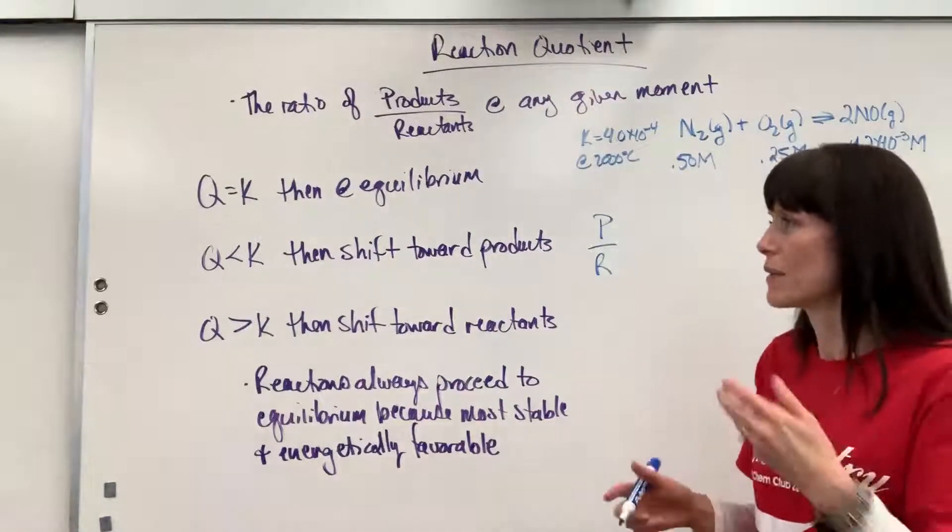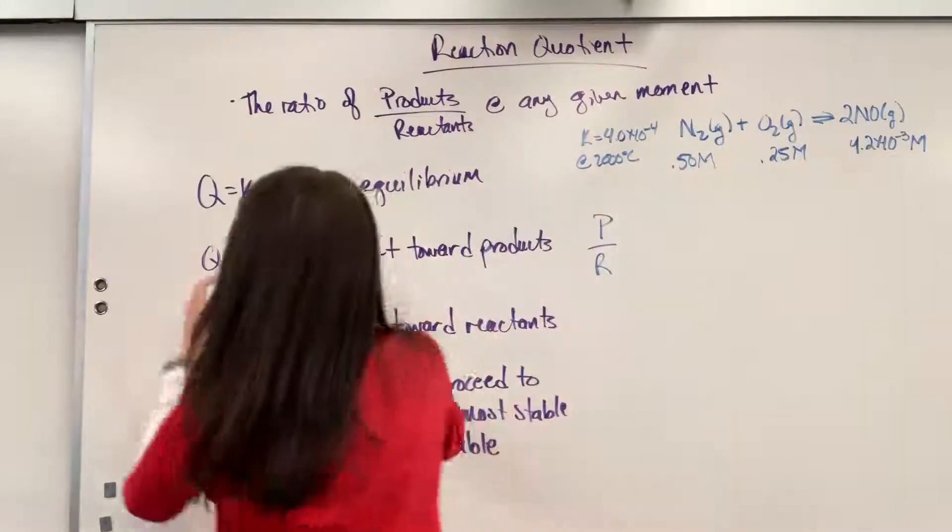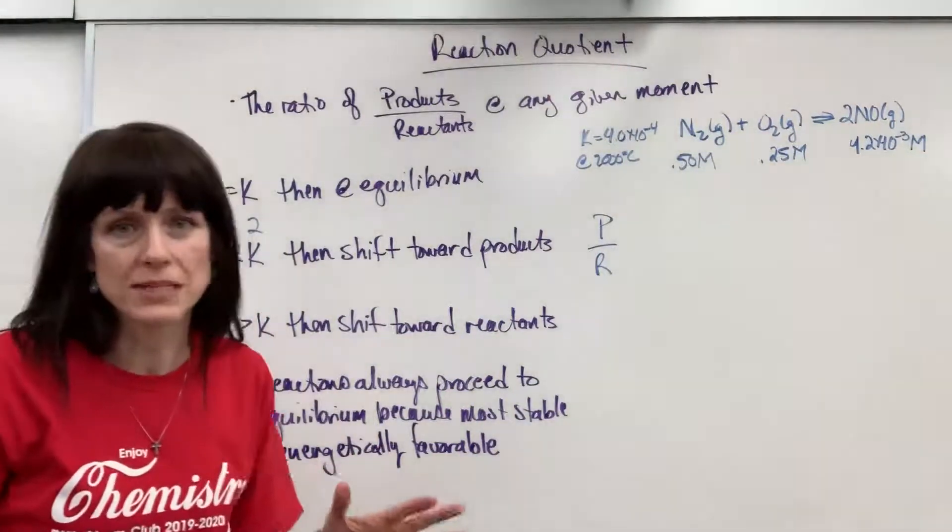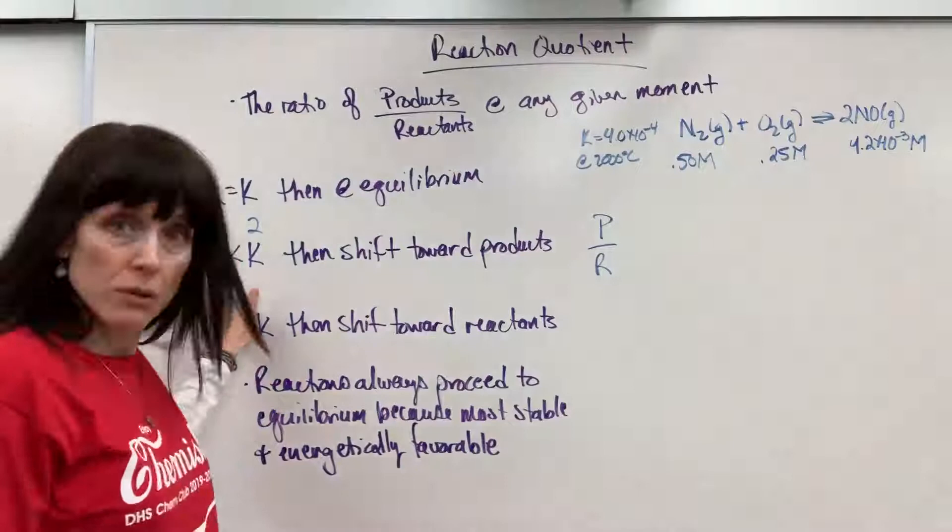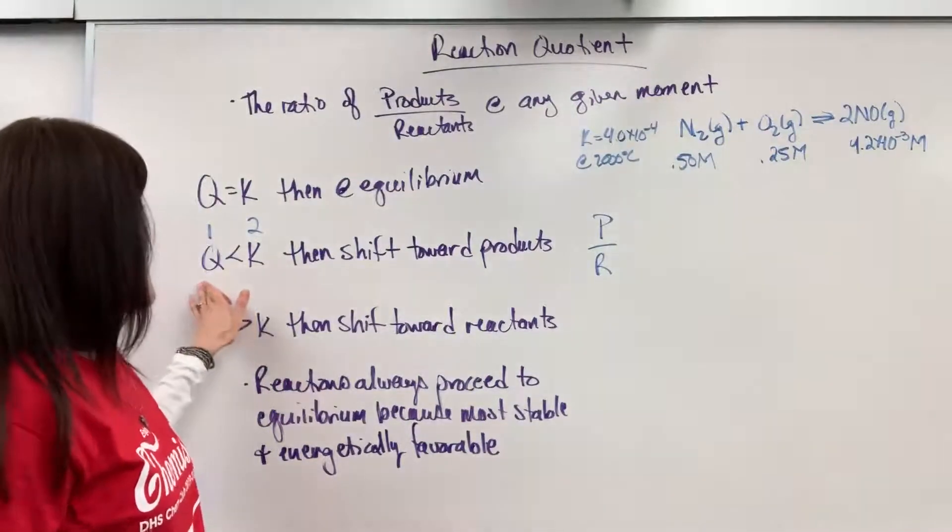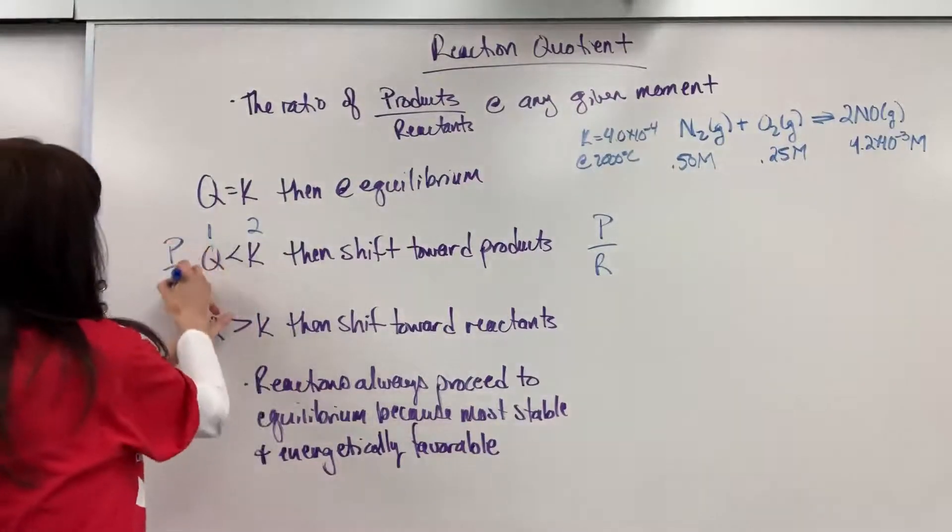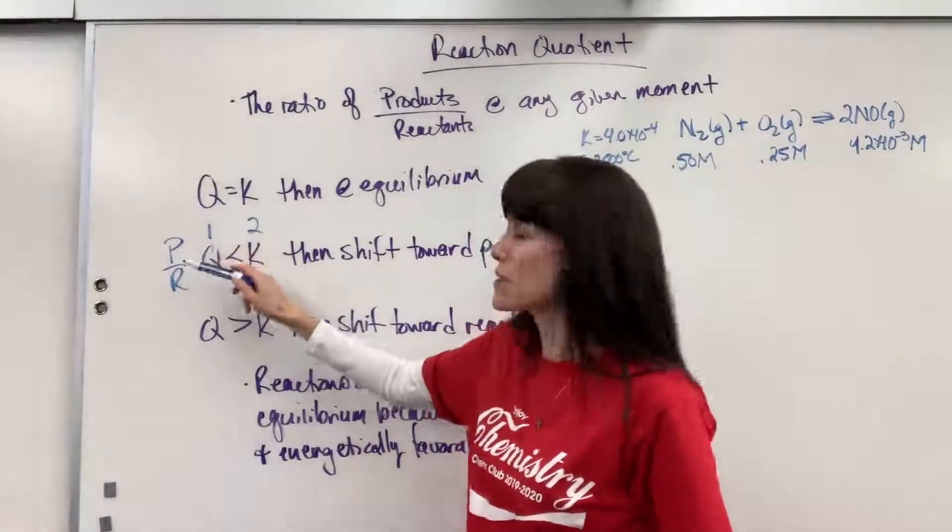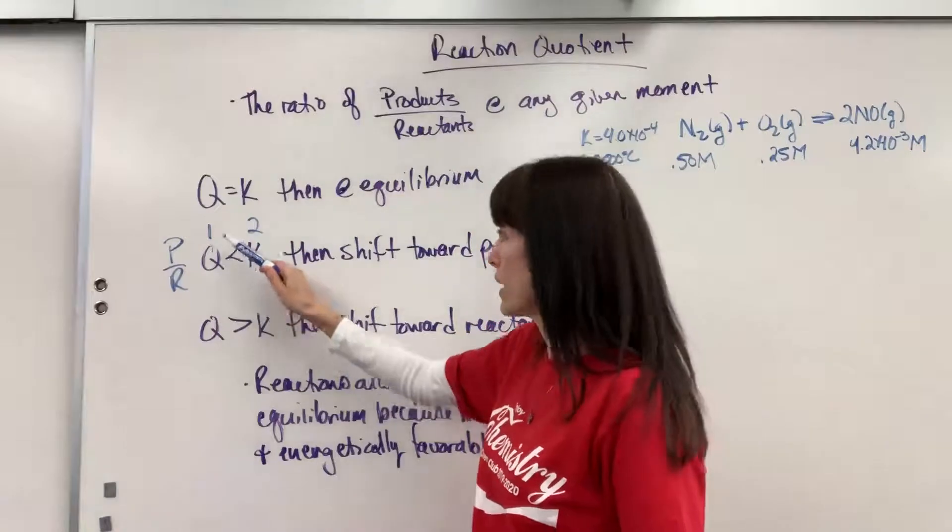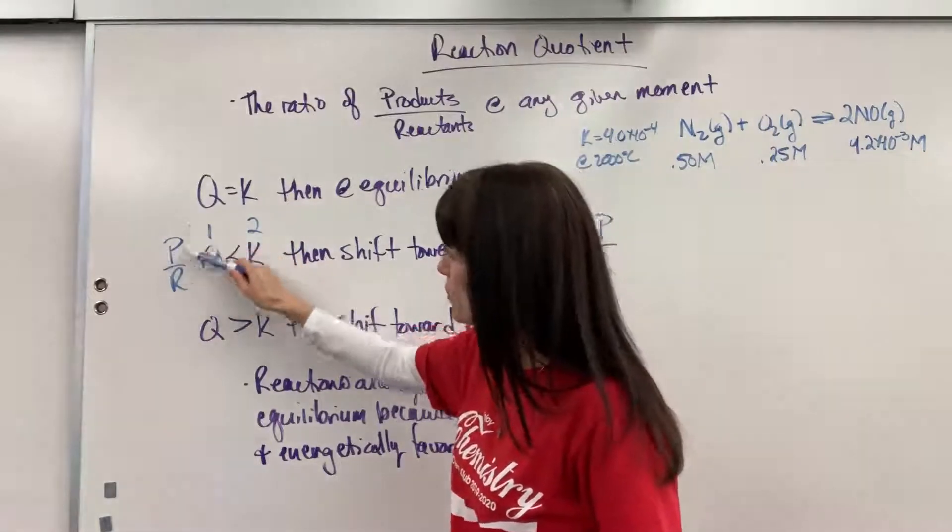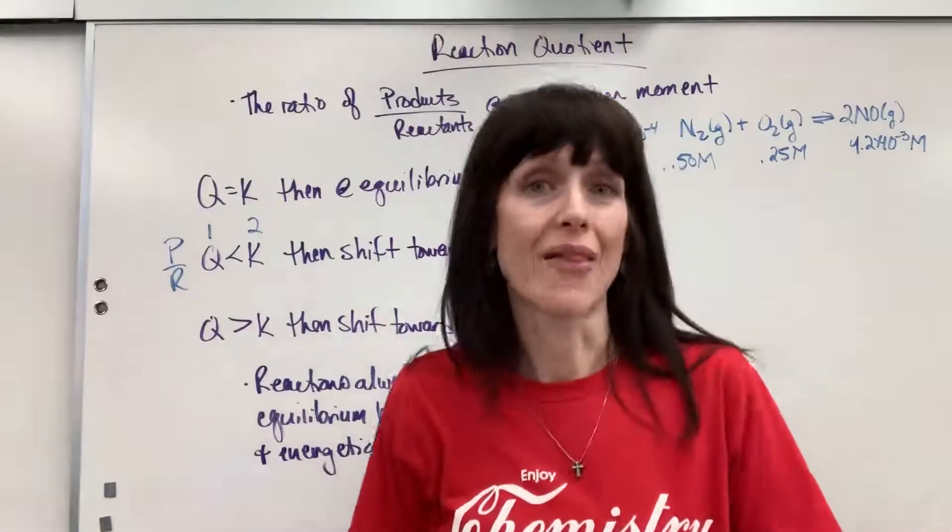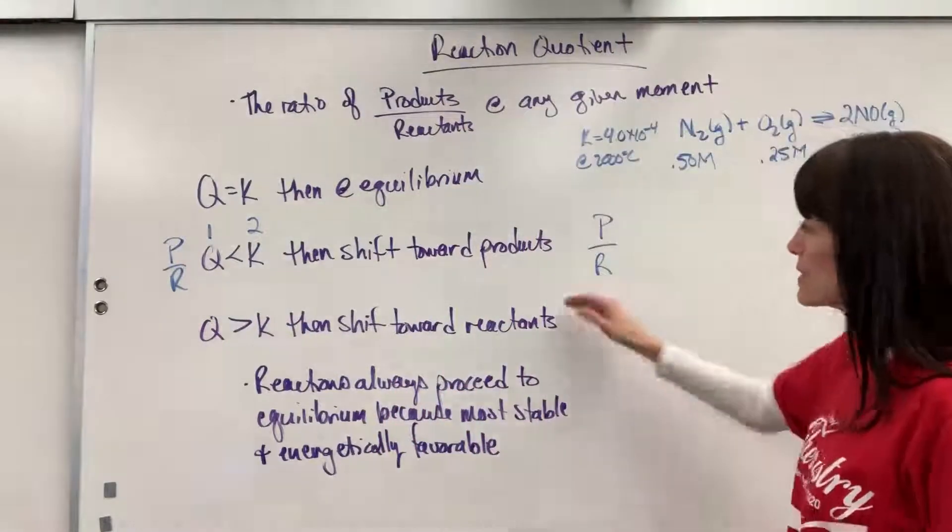Sometimes what I'll do, if I'm thinking about this, let's say that this is a one and that's a two. Just a really simple number. So Q is obviously less than K. And then I think products over reactants. So I'm thinking, what has to happen to these numbers to get us to a two? Well, I need a bigger number. I need a bigger numerator. It's got to go to products. So sometimes I'll think it out that way.